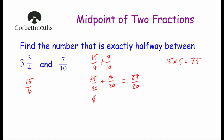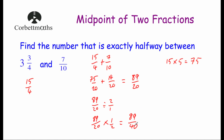Now we need to divide by two. So we have eighty-nine twentieths divided by two over one. Remember, that's the same as multiplying by the reciprocal — multiplying by one-half. Eighty-nine over twenty multiplied by one-half: eighty-nine times one is eighty-nine, and twenty times two is forty. So our answer is eighty-nine fortieths.